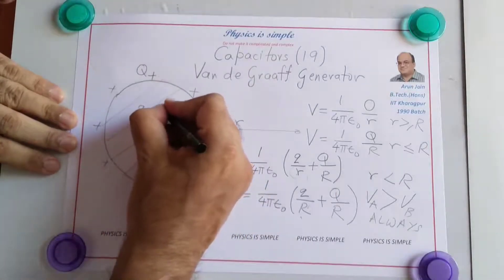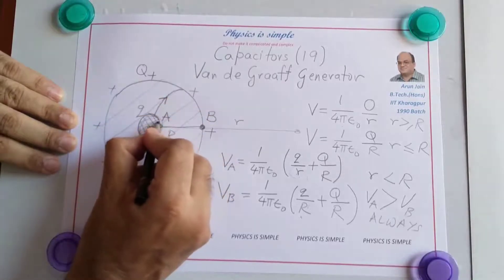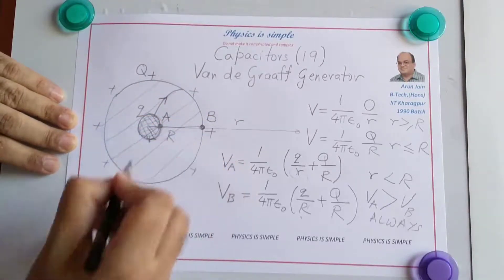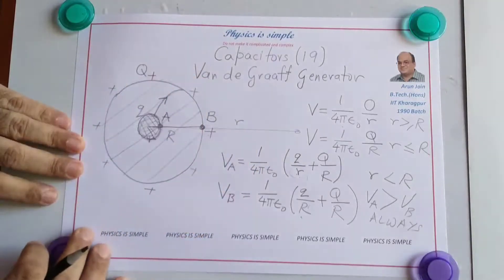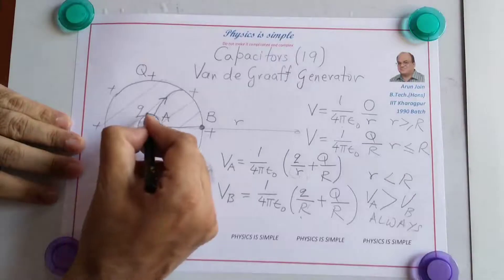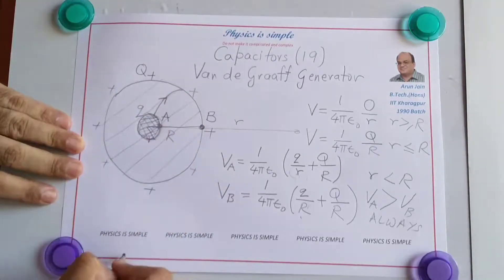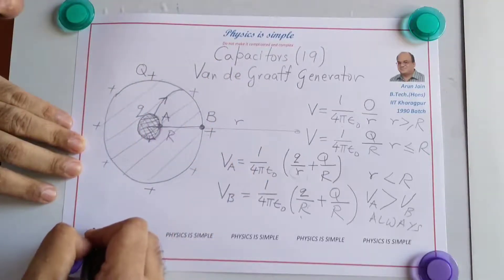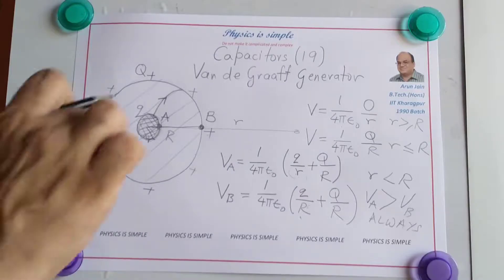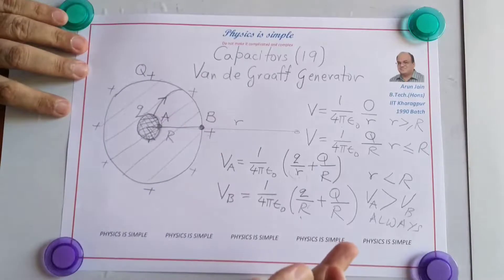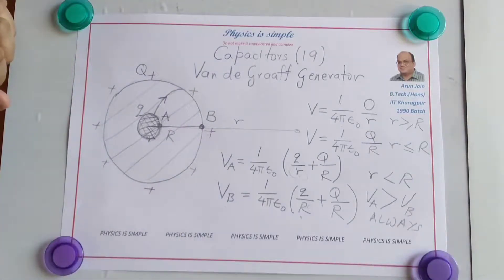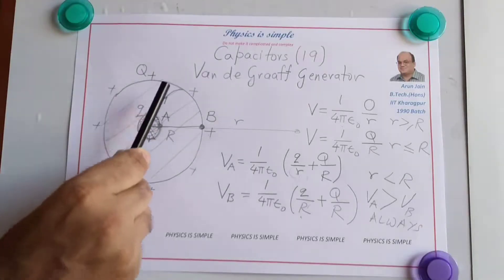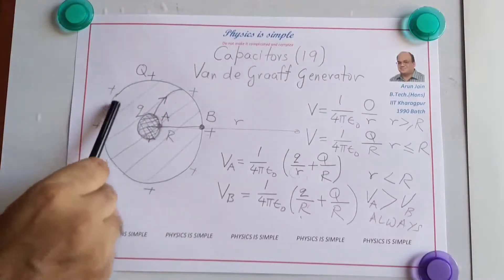Now if these two are connected by a conductor, charge will always flow from A to B, because the potential of A is more and the potential of B is less. So all the charge will go to the spherical shell. This way we can charge this inner spherical conductor again and again, keep transferring charge to the outer shell. This transfer can continue until the spherical shell reaches its breakdown potential, after which there will be sparking. But as long as that is not reached, charge can always flow from inside to outside, and we can charge the spherical shell to a very large potential.